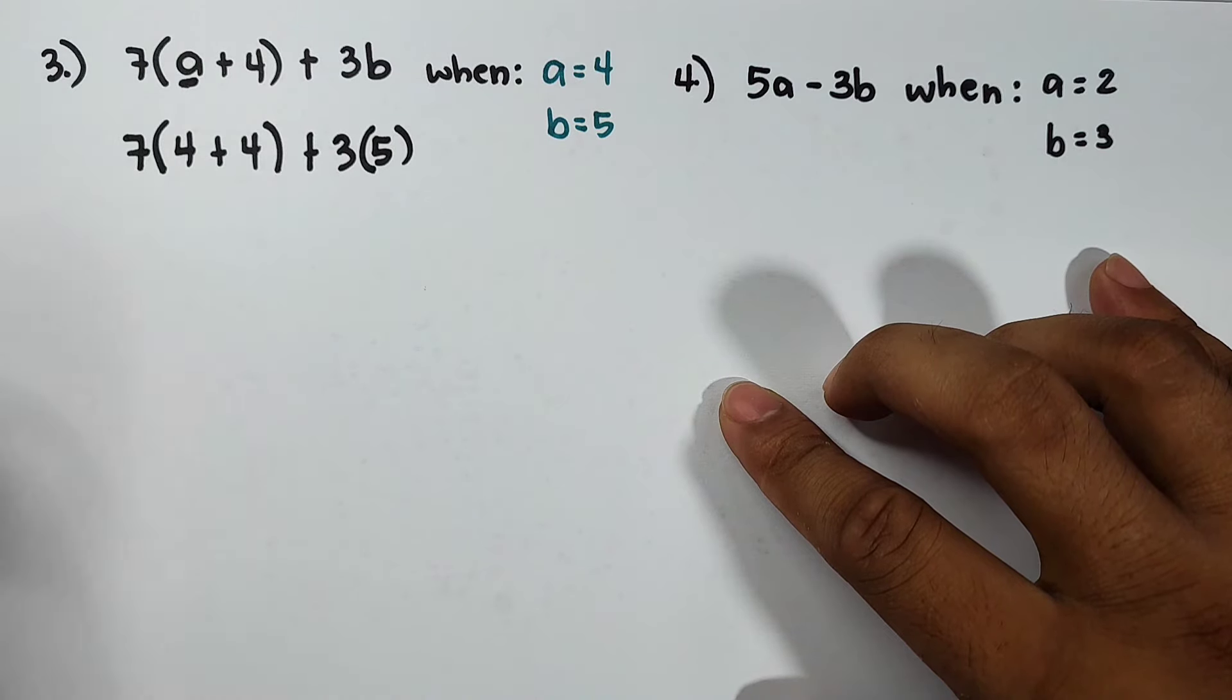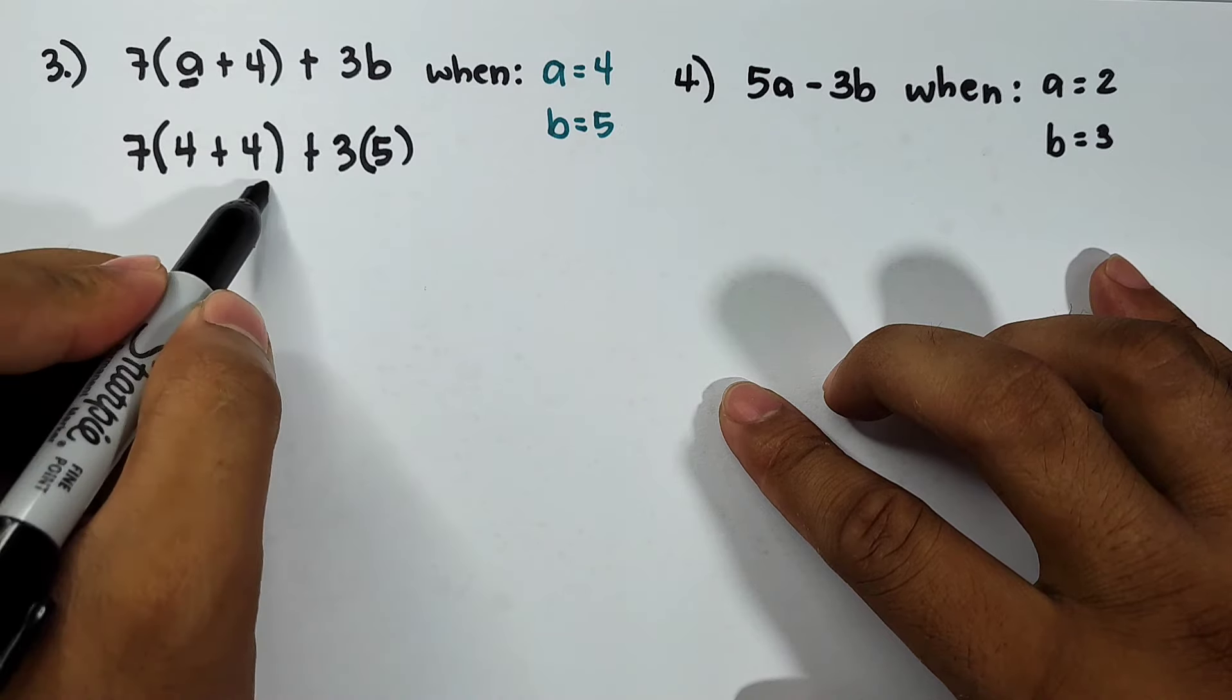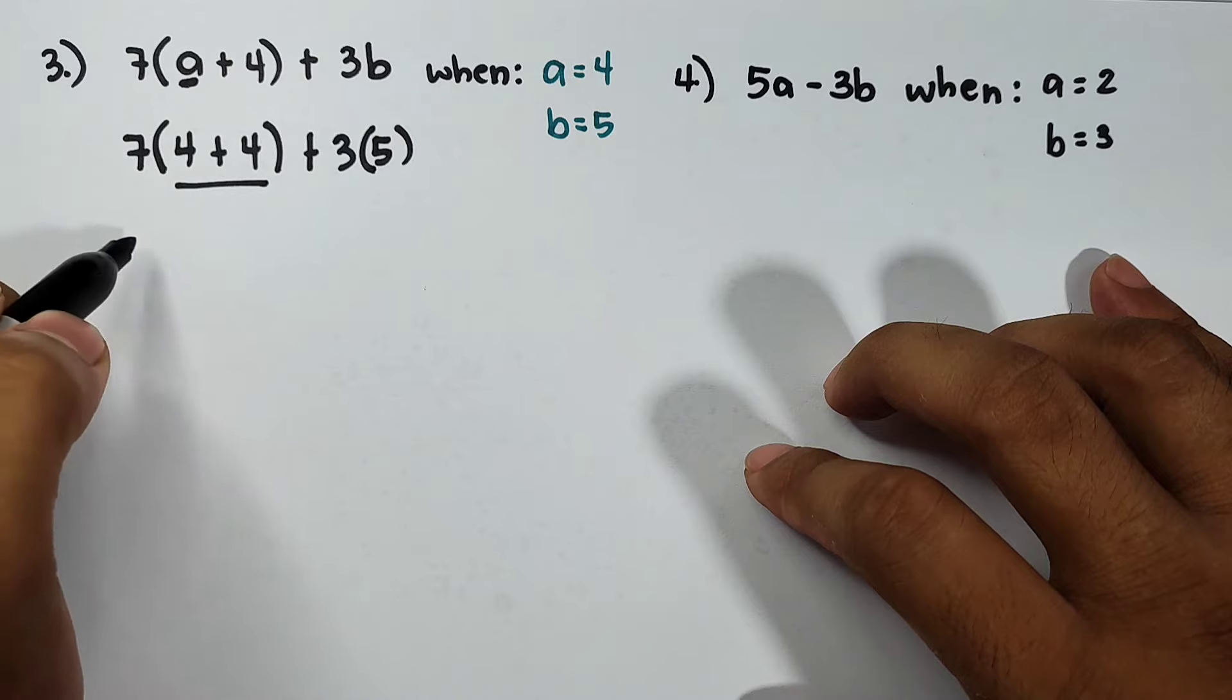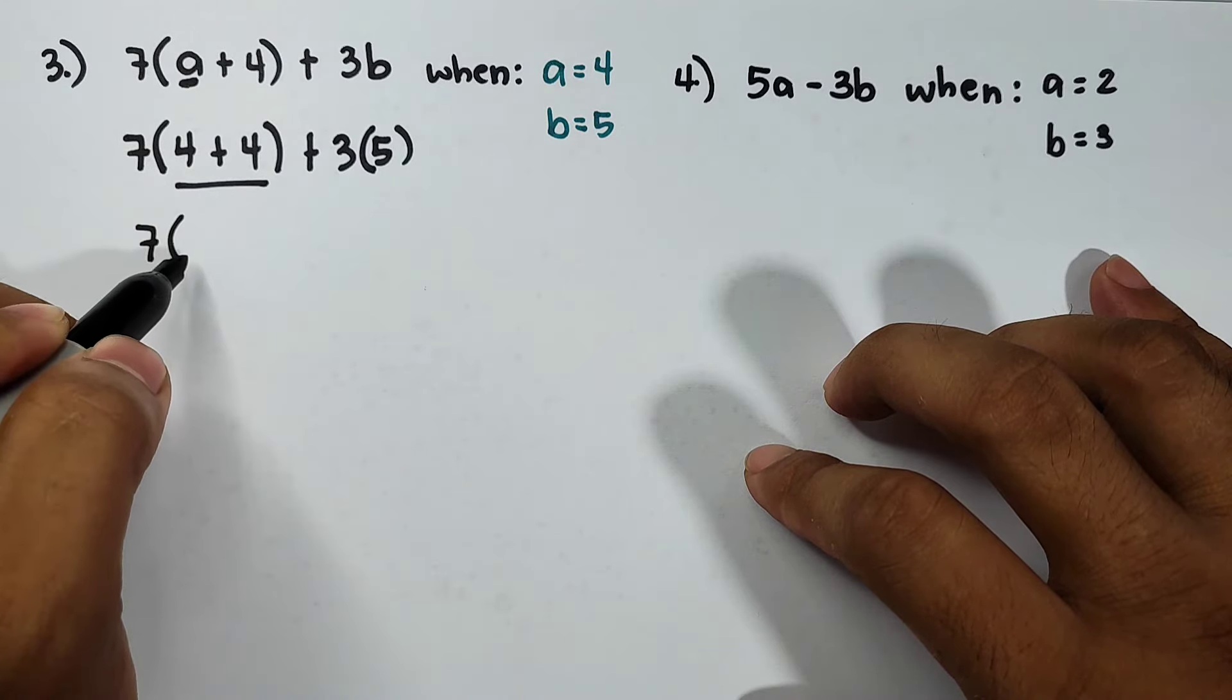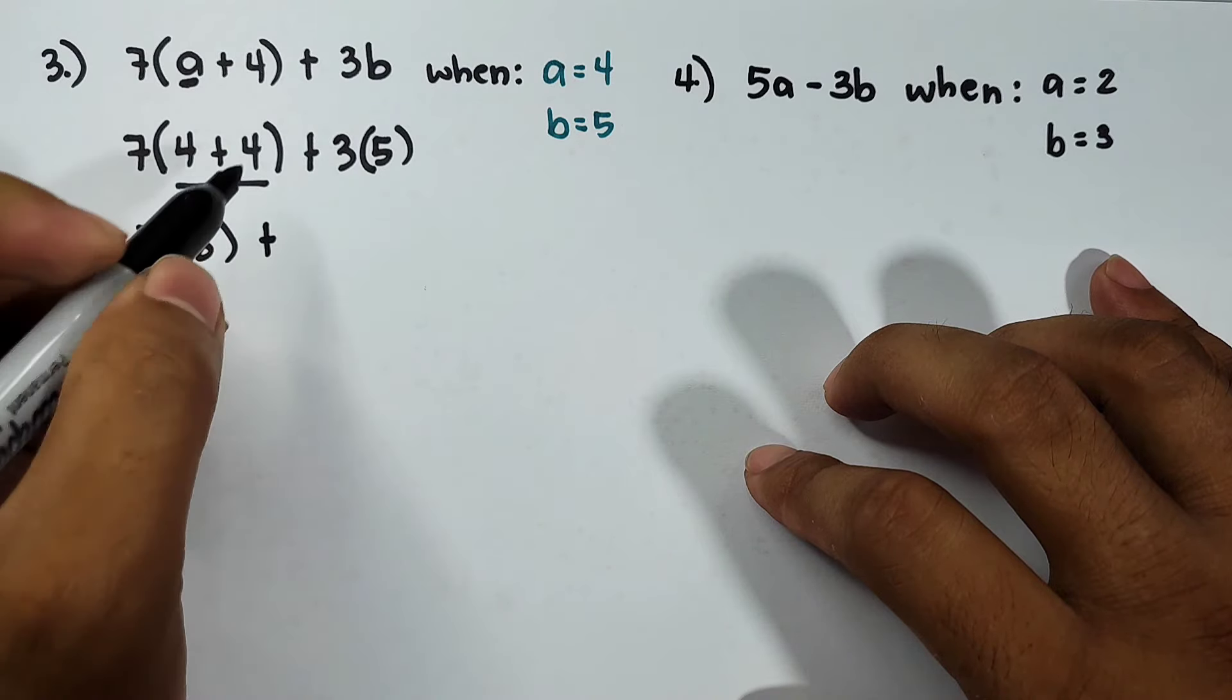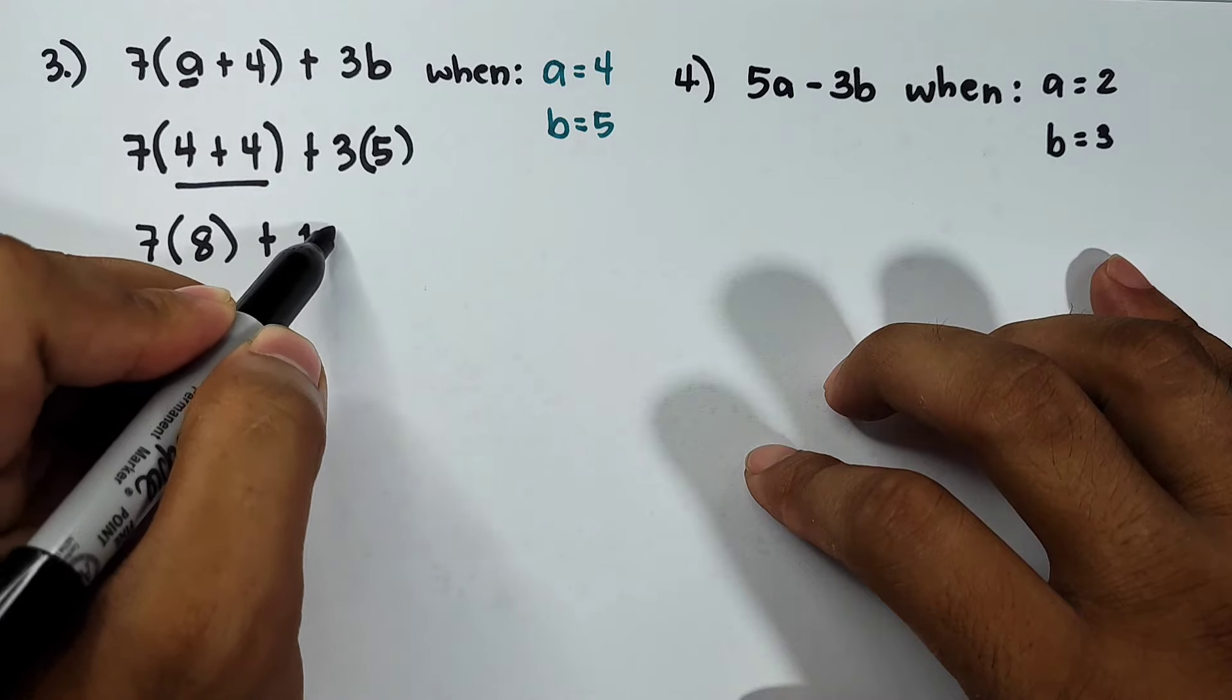So what's next? Are we going to multiply 7 and 4? No. Simplify first the numbers inside the parenthesis. It will become 7 times (4 plus 4 which is equal to 8) plus 3 times 5. You can multiply them and that is basically 15.